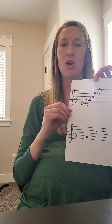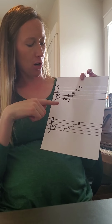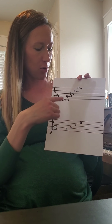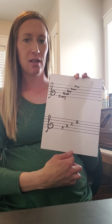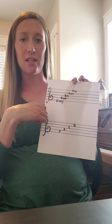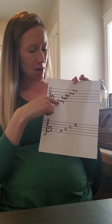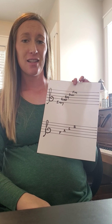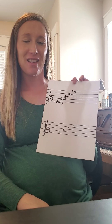Now that you have what's called a music staff, we're going to name all the notes. We're going to start with the lines. The lines have an acronym — a saying that helps us remember. This acronym goes: Every Good Boy Does Fine. The beginning of each of those words is the name of that note. We always start at the bottom and go up to the top, so it's E, G, B, D, and F. One more time: Every Good Boy Does Fine. Those are the names of the lines.